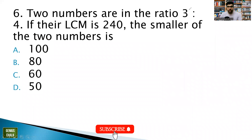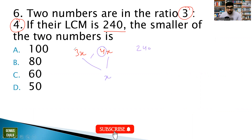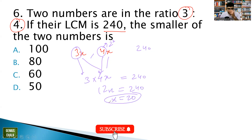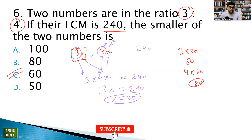Question 6: Two numbers are in ratio 3:4 and their LCM is 240. Let the numbers be 3x and 4x. Their LCM = 12x (since 3 and 4 are co-prime, LCM of 3x and 4x is 12x). So 12x = 240, giving x = 20. The smaller number is 3×20 = 60, the larger is 4×20 = 80. The answer for the smaller number is 60.